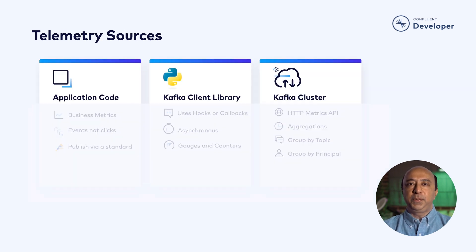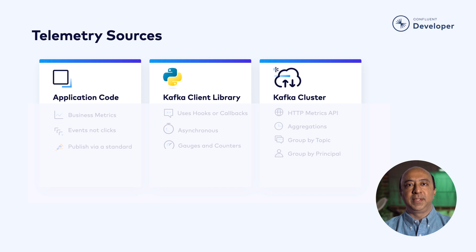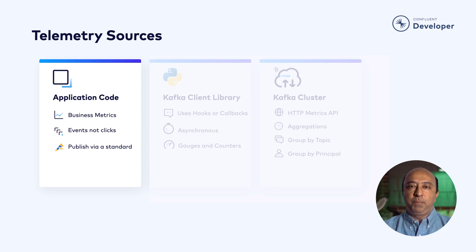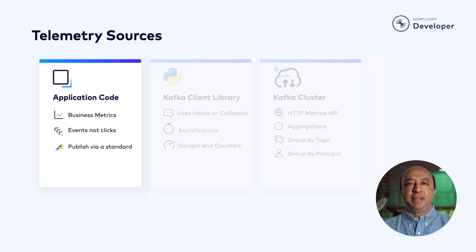For complete transparency, we need to collect telemetry from each of the three parts of our system: the application code, the client library, and the cluster itself. The application normally does so much more than sending Kafka messages, and we should make sure that we emit telemetry for all of its actions. A key point with metrics is that they should be events — that something happened — and not that a particular line of code was executed.